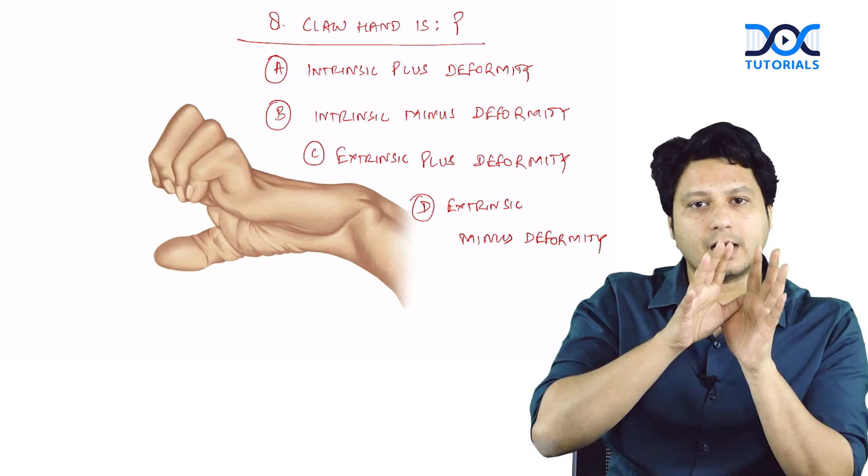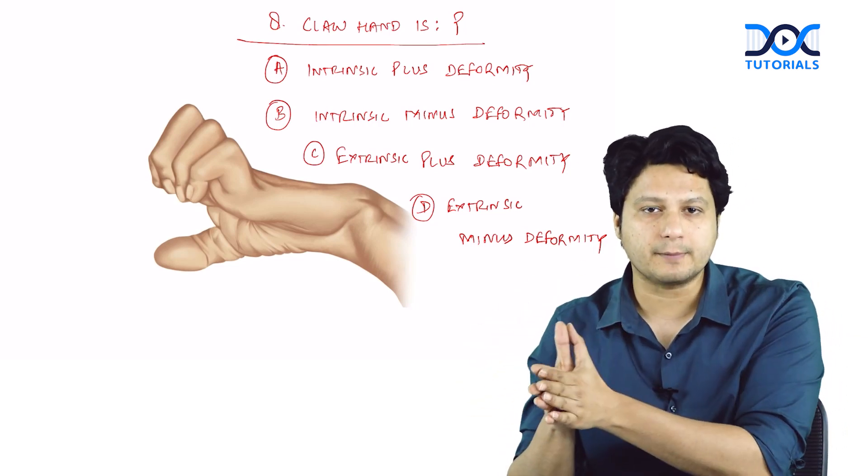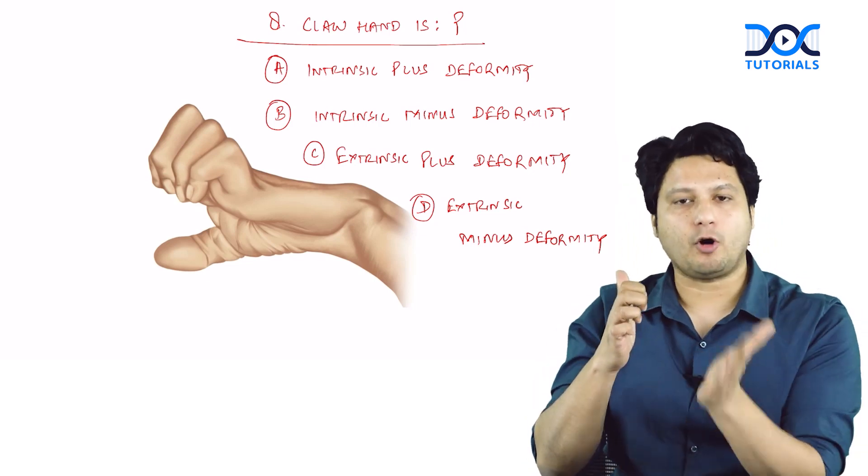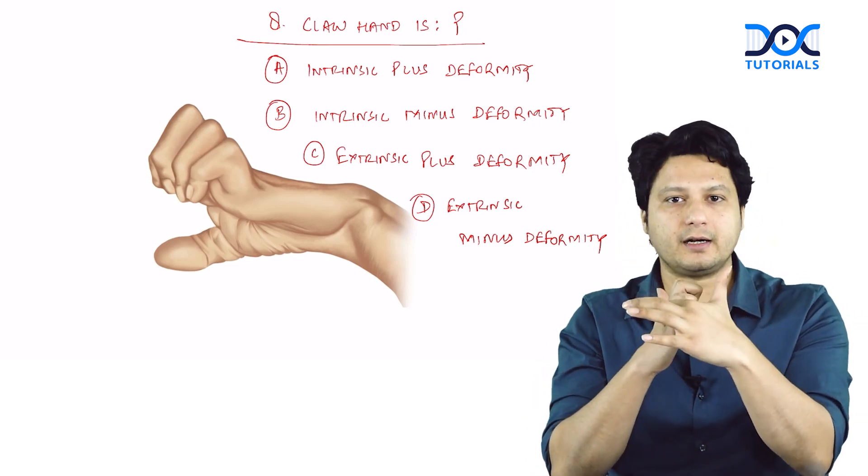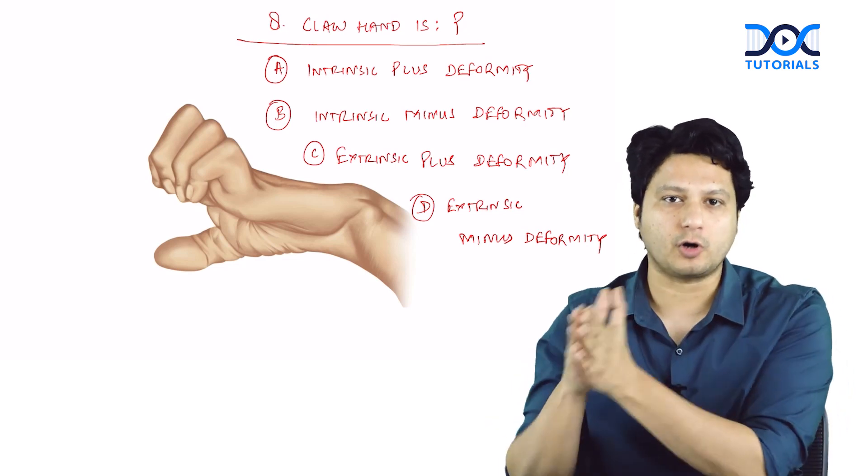Once the lumbrical muscle is not functional due to ulnar nerve injury, the hand takes on a deformity in the opposite direction: extended metacarpophalangeal and flexed interphalangeal joints, known as claw hand.